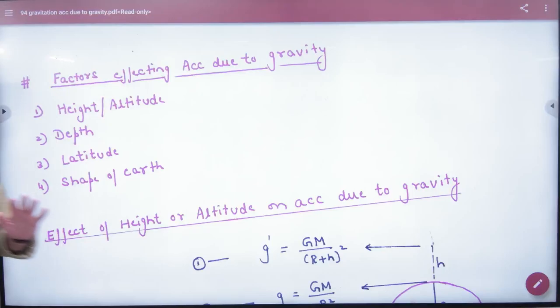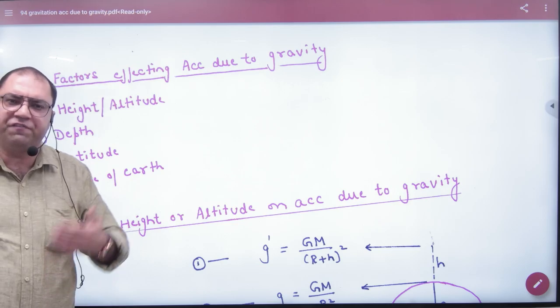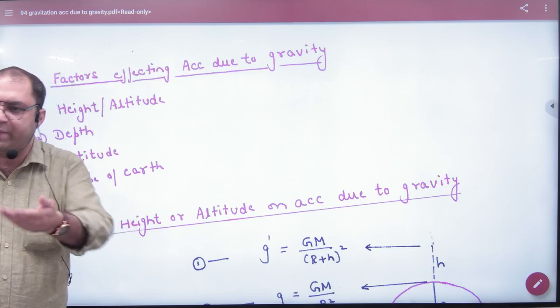So, factors affecting acceleration due to gravity. Acceleration due to gravity is small g value. Different factors depend on different factors.